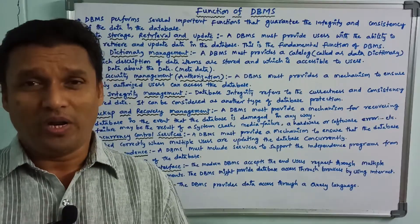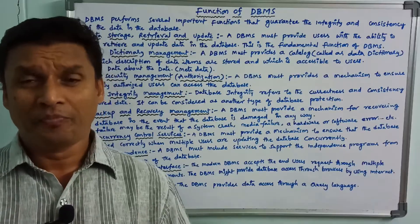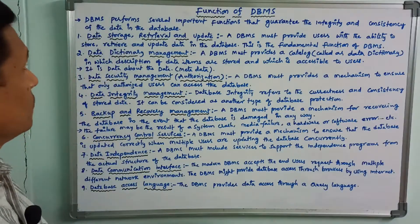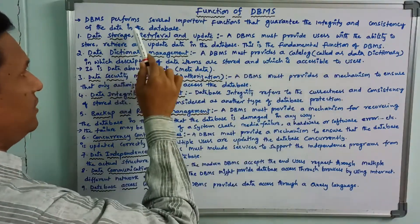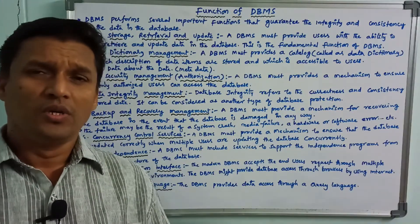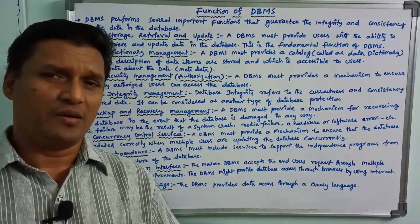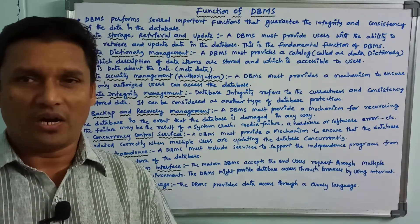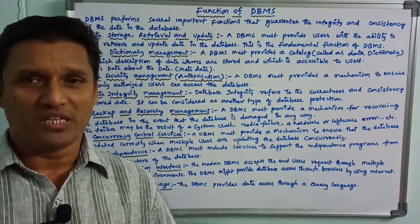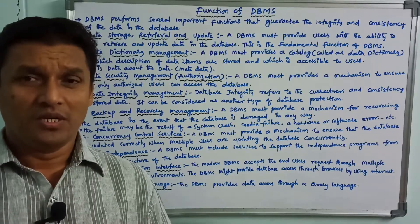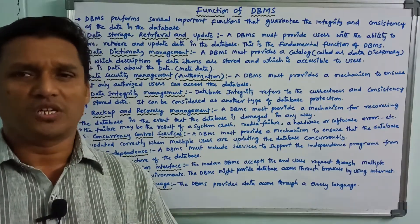We need to cover DBMS functions. Functions means features. So, features of DBMS and functions of DBMS — these are the main features of DBMS. DBMS provides several important functions that guarantee the integrity and consistency of the data in the database. Data integrity means correctness; consistency means proper way. What are the features and functions of DBMS? This is our topic.